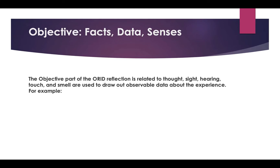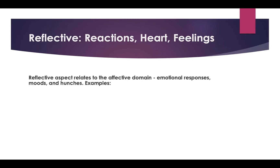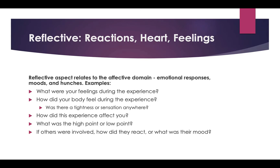The Objective part of an ORID reflection is what you start with. It's simply writing down objectively what you experienced — what were the sensations. You can think of the five senses: what images do you recall, what sounds do you recall, what did people say. The Reflective part is where you talk about what your emotions were, maybe your mood or your hunches.